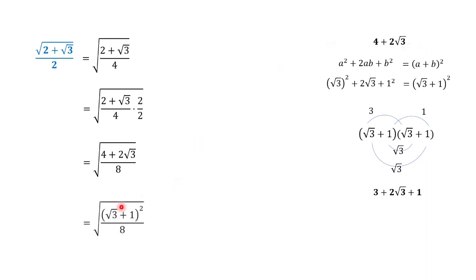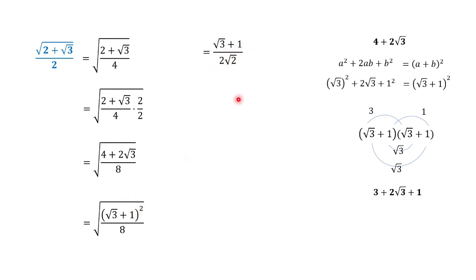Therefore, our numerator can be written as the squared quantity of square root of 3 plus 1. Getting the square root, we have square root of 3 plus 1 — the square root cancels. And then over square root of 8, which is 2 square root of 2.